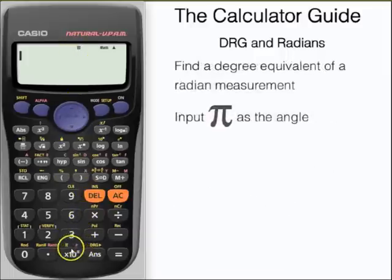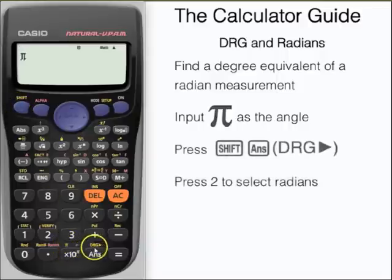We're going to use the DRG button, or degrees, radians, and gradians, to change a radian measurement into the degree equivalent. The angle we're going to use is pi, so input pi, and then to access DRG, we press shift and the answer button.